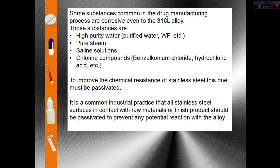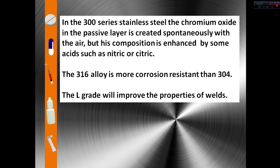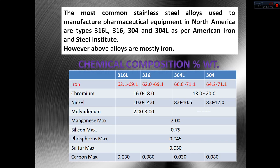One of the ways to get the best corrosion resistance from stainless steel is passivation. In the 300 series stainless steels, the chromium oxide in the passive layer is created spontaneously with air, but its composition is enhanced by acids such as nitric or citric. The 316 alloy is more corrosion resistant than 304, and the L-grade will improve the properties of welds. No matter if we have 316L stainless steel, that alloy will still have a lot of iron — at least 62%, as we can see in this chart.